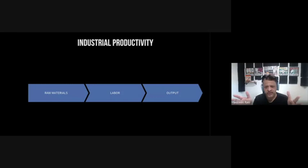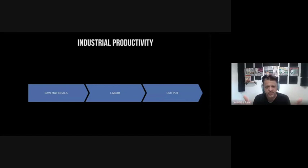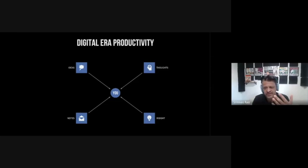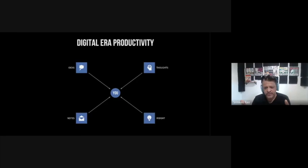In the industrial era, productivity was a combination of raw materials, labor, and output — working in a linear fashion, like a factory assembly line making shoes. In the digital era, the assembly line is more like a hub-and-spoke model. We have ideas, thoughts, and insights, and the output is the result of reading, writing, software programming, whatever it is. But the way the input comes in isn't linear because we're not actually making widgets — we're creating knowledge and information. So productivity in the digital era looks completely different than in the industrial era.